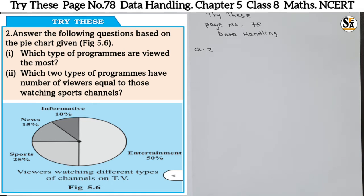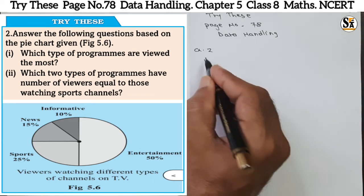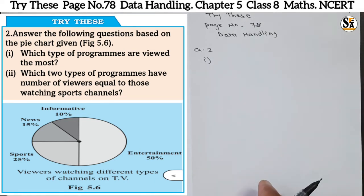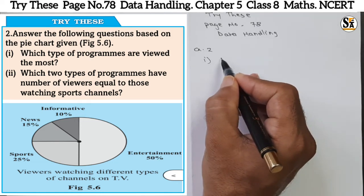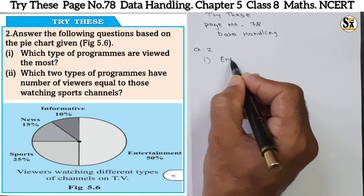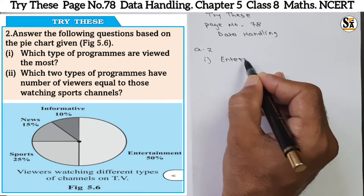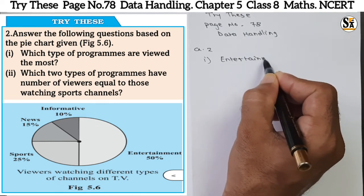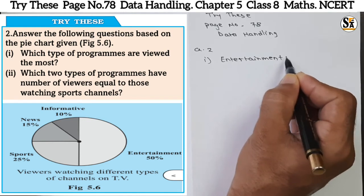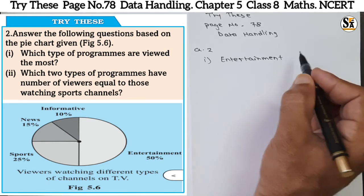The first question is: which type of program is viewed the most? From the pie chart, it is clearly seen that 50% of viewers watch entertainment programs. So the answer is entertainment — entertainment type of programs are viewed the most.